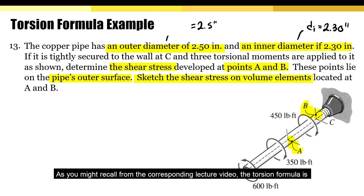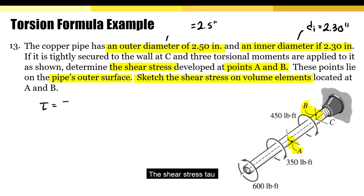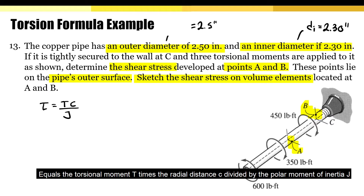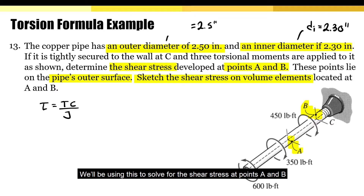As you might recall from the corresponding lecture video, the torsion formula is: shear stress tau equals the torsion moment T times the radial distance C divided by the polar moment of inertia J. We'll be using this to solve for the shear stress at points A and B.